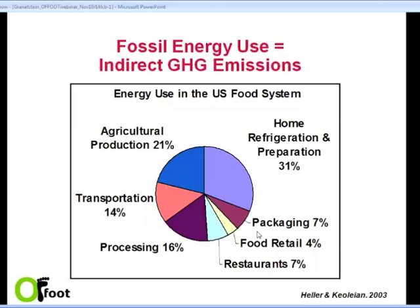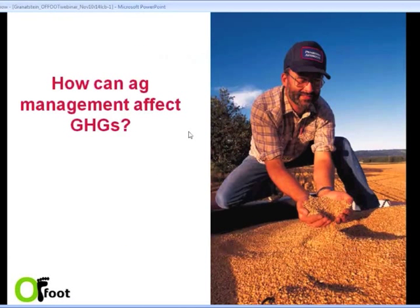Lastly, there are certainly emissions from fossil energy use in agriculture, but looking at the entire US food system, agriculture only accounts for about 20% of those emissions. There are other players in the food system that can also impact CO2 emissions. Even at the household level, about 30% of that energy use occurs at home through refrigeration and cooking — a contribution that actually exceeds the fossil energy use in the agricultural sector. So there are many ways to work with the food system's contribution, and agriculture is one of them. I'll now pass the discussion to Dave Huggins to talk about how agriculture management in general can affect greenhouse gases.